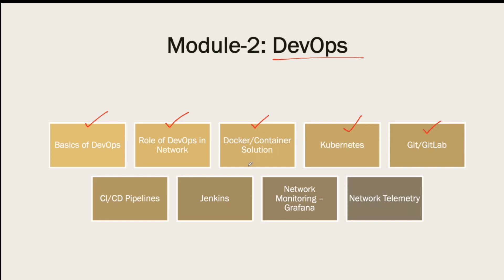Then we'll talk about CI/CD pipelines — Continuous Integration and Continuous Deployment pipelines. The name clarifies it somewhat: we are creating a pipeline with some mechanism to push configurations, verify that configuration, and come up with the end result. We'll be talking about Jenkins as part of this CI/CD pipeline story.